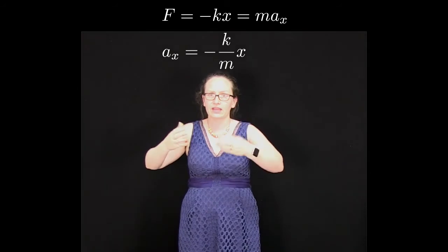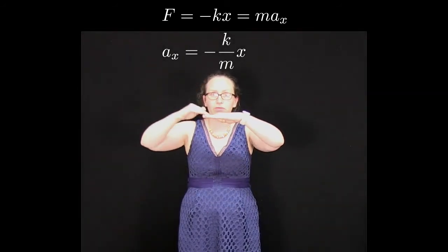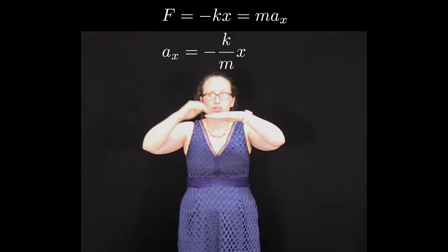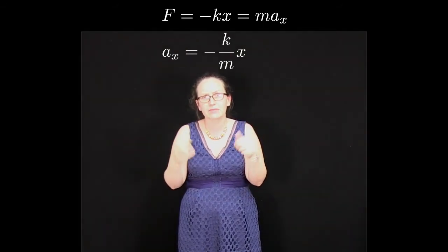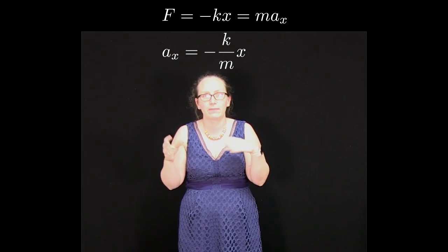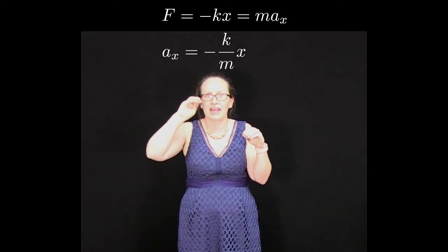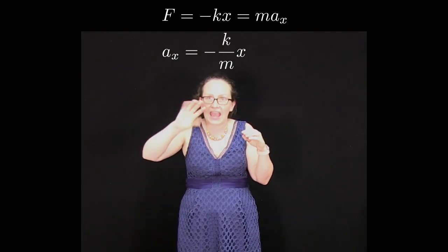And so in that case, the maximum displacement from equilibrium was given by the amplitude a, and it's exactly the same in this case here. So the maximum acceleration for a particle is given by k over m times a.